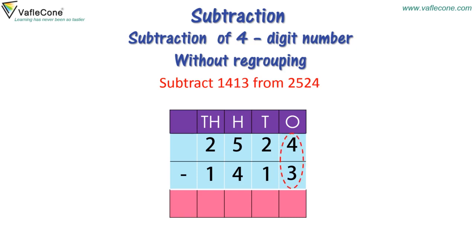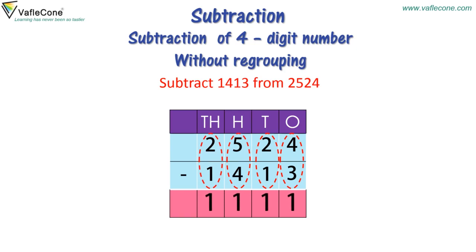4 minus 3 is equal to 1. And then at the 10's place, 2 minus 1 is equal to 1. And proceeding to the 100's place, 5 minus 4 is equal to 1. And now at the 1000's place, 2 minus 1 is equal to 1. So the difference is 1,111.